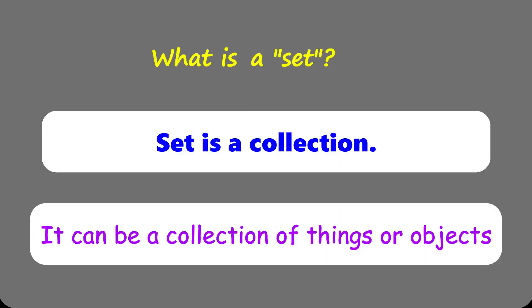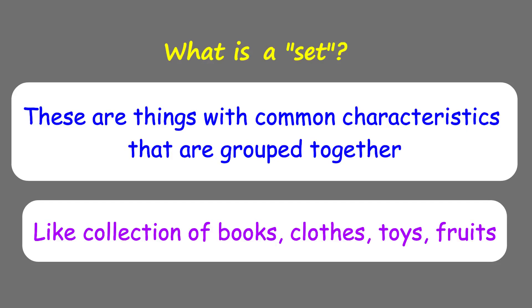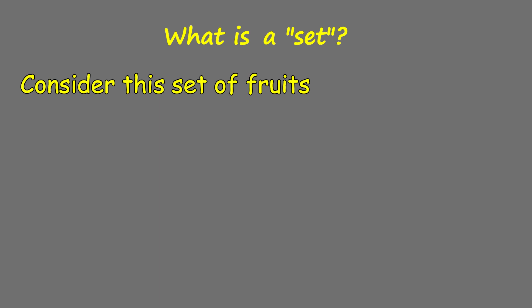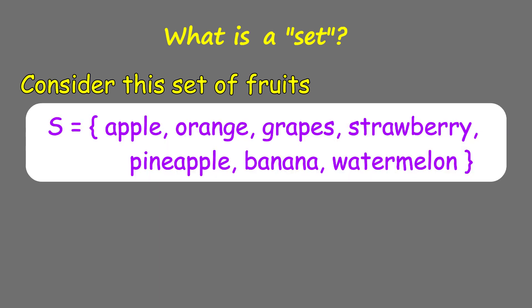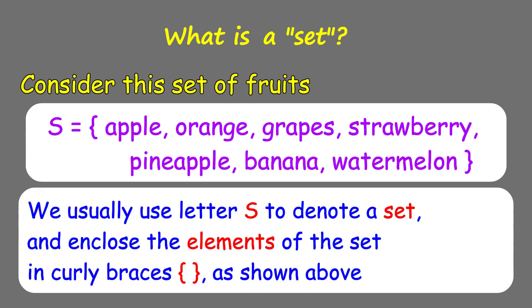Let's go first to the definition of terms. What is a set? A set is a collection of things or objects — things with common characteristics that are grouped together, like a collection of books, clothes, toys, or fruits. Consider this set of fruits: apple, orange, grapes, strawberry, pineapple, banana, and watermelon. Let's say these are your favorite fruits. We usually use the letter S to denote a set and enclose the elements of the set in curly braces, as shown above.